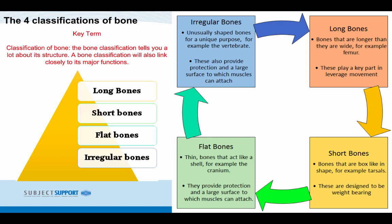Flat bones are thin bones that act like a shell — for example, the cranium. They provide protection and a large surface to which muscles can attach.